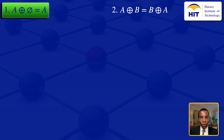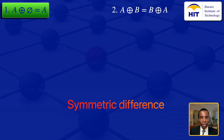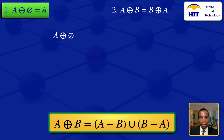To do this, I will look at the definition of the symmetric difference. The symmetric difference of sets A and B equals the set difference of A and B, union the set difference of B and A. So I'll write my left hand side: the symmetric difference of A and the empty set. Using this formula, where we have B we put the empty set, so that we have the difference of A and the empty set, union the difference of the empty set and the set A.